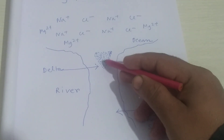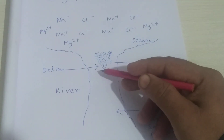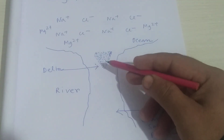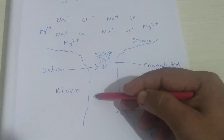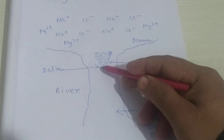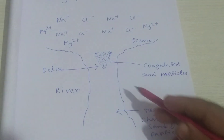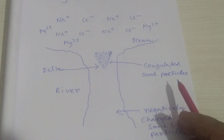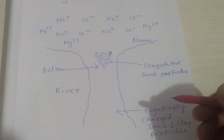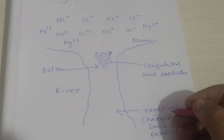As a result, at the joining point or meeting point of the ocean and river, a delta-shaped landform is formed, which is called a delta.